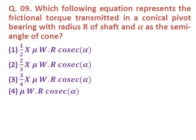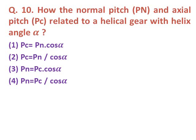Question nine: Which equation represents the frictional torque transmitted in a conical pivot bearing with radius R of shaft and alpha as semi-angle of cone? Option one: half mu W R cosec alpha. Option two: two-thirds mu W R cosec alpha. Option three: three-fourths mu W R cosec alpha. Option four: mu W R cosec alpha. The correct answer is option one: one-half mu W R cosec alpha.